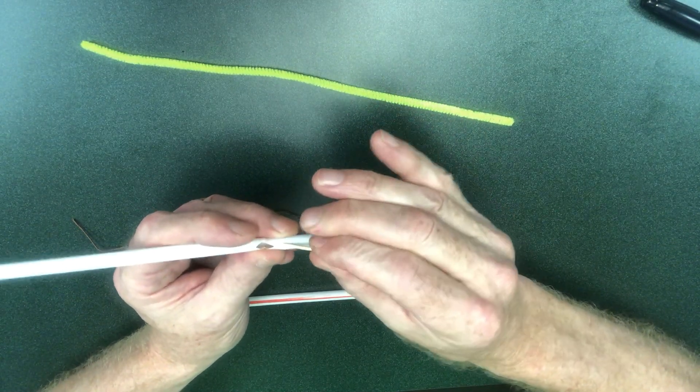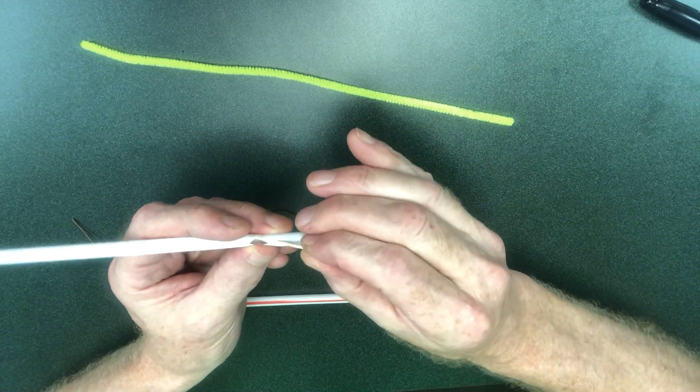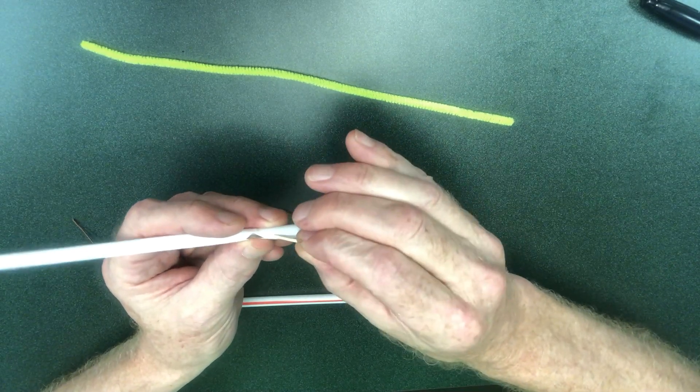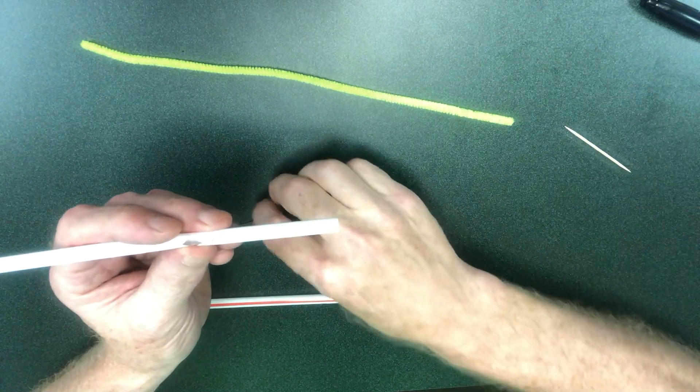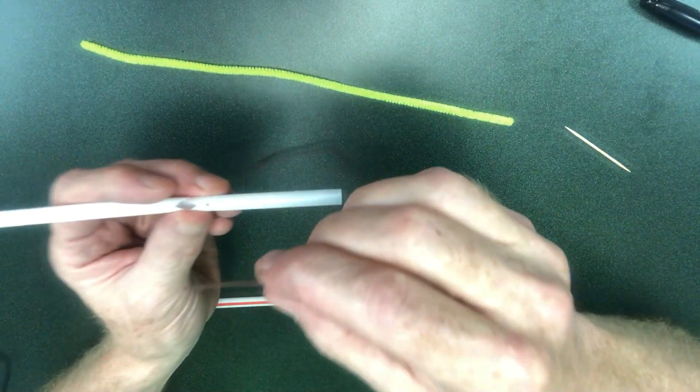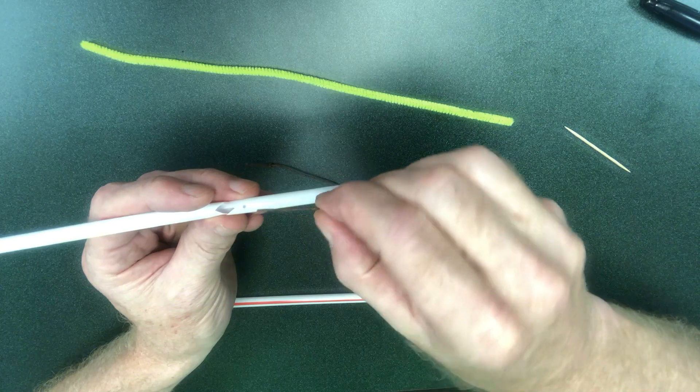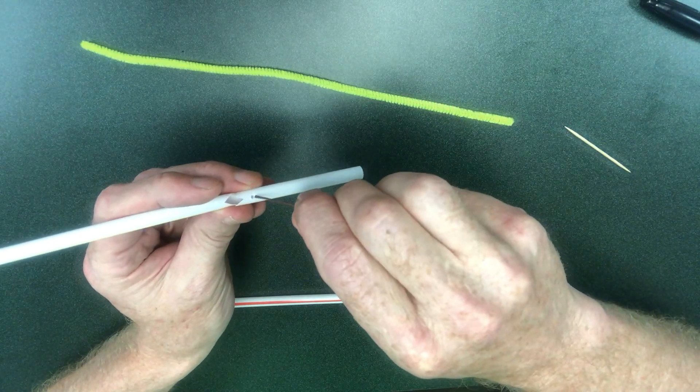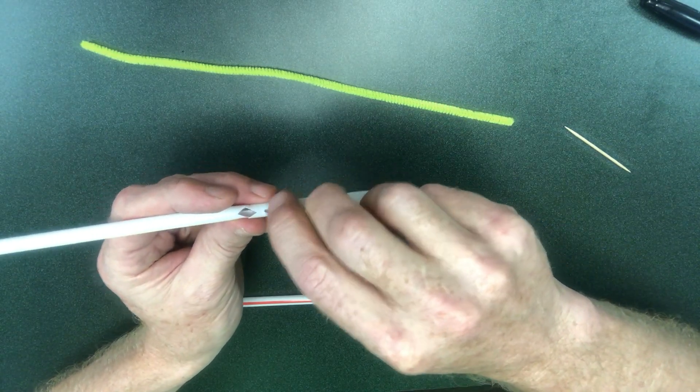Once you do that, you take your string that's going to serve as the tendon for your prosthetic finger, and you put one end of the tendon through that little hole.